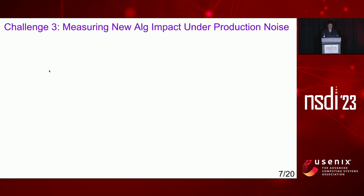Now let's talk about challenge three. Measuring the impact of a new cache algorithm in production is challenging due to production environment noise. We cannot solely rely on simulation as they are imperfect proxies for production behavior, as also discussed by previous work. And it is impractical to replicate user requests to test different algorithms at every location.